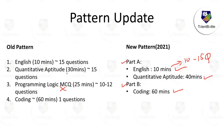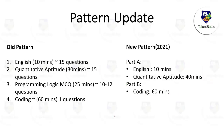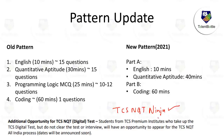In Quantitative Aptitude, last year it was 30 minutes with 15 questions; this time it is 40 minutes, so maybe around 20 questions. Coding remains 60 minutes with one question. This pattern has been provided to training and placement officers of premium institutes — you can see the screenshot of the PDF on screen. Students not from premium colleges should wait for the TCS NQT Ninja drive.